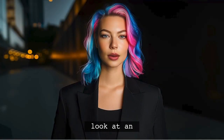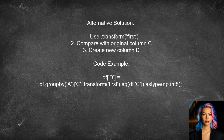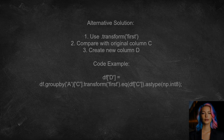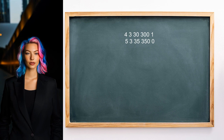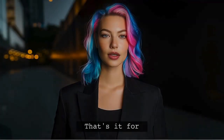Another alternative solution suggests using the transform method for a more efficient approach. They recommend applying the transform function to group by column A and retrieve the first value of column C. This method allows you to compare directly with the original column C in one step. The transform method returns a vector of the same length as the original data frame, making it easy to create the new column D, which indicates whether each value in column C is the first in its group.